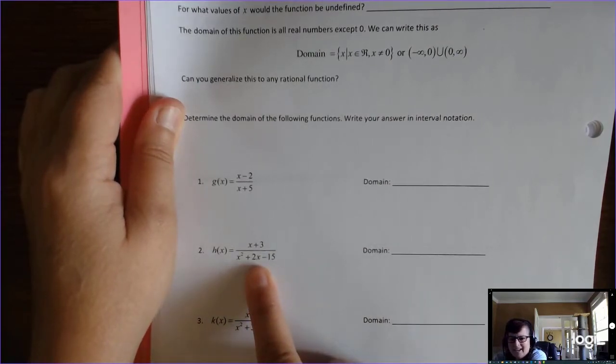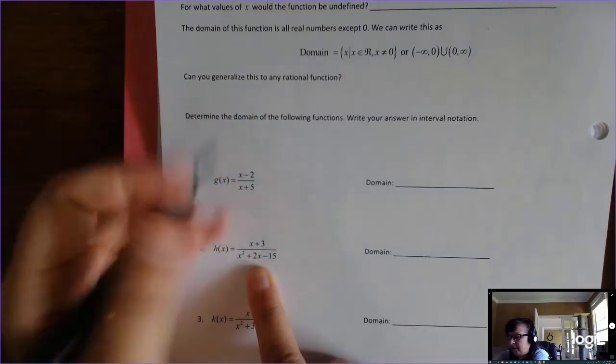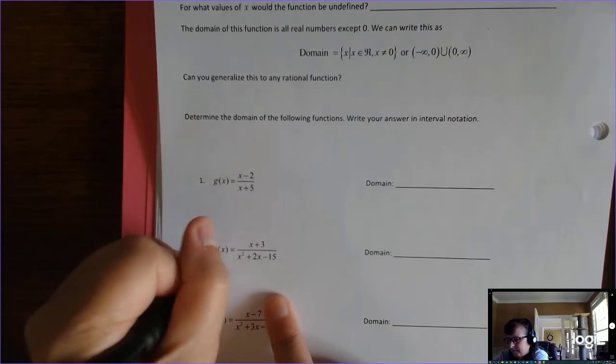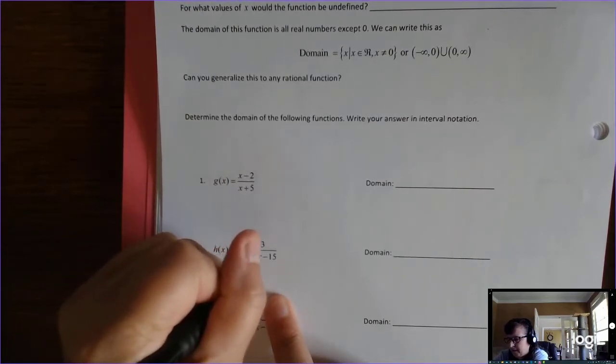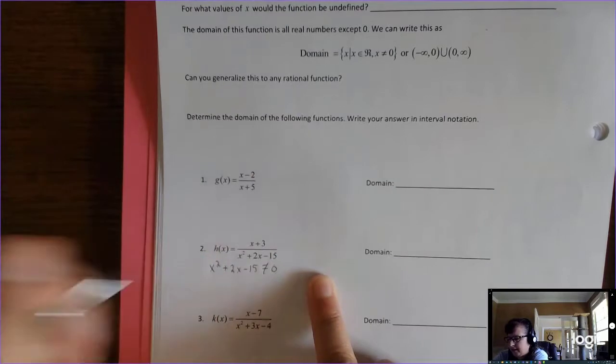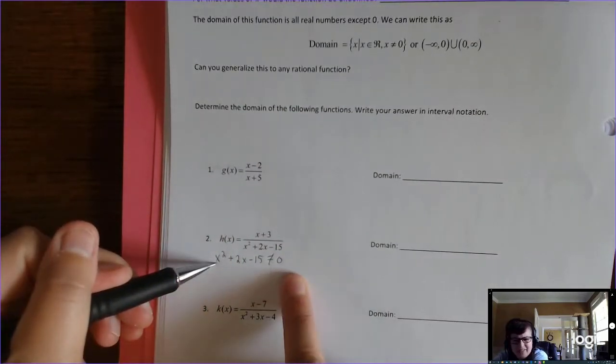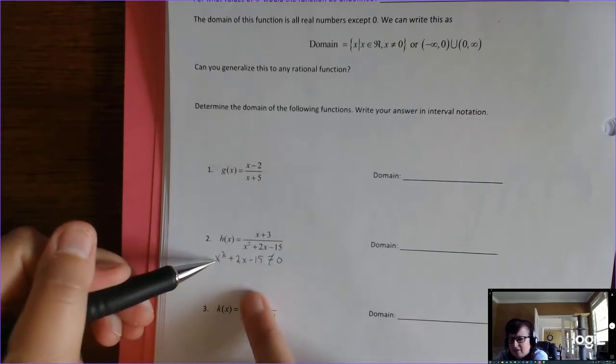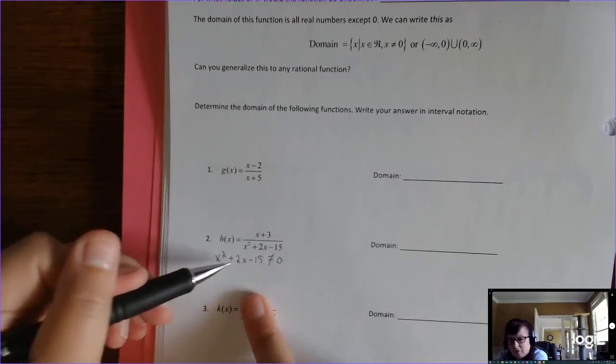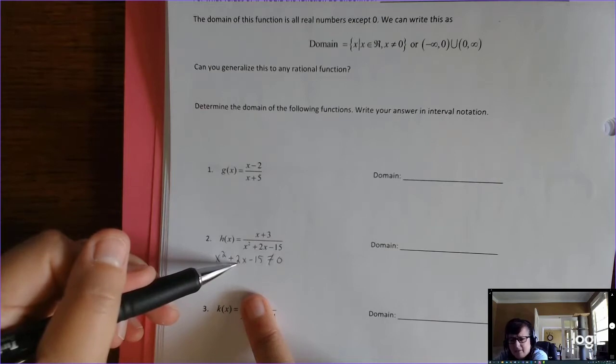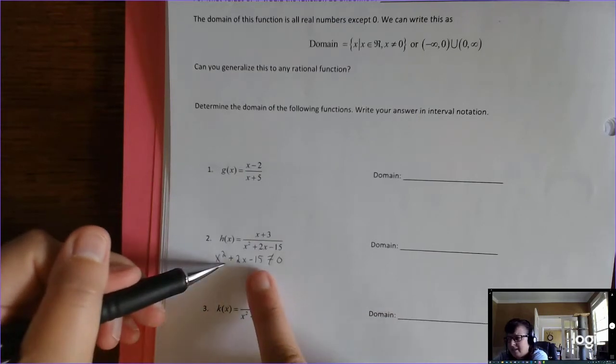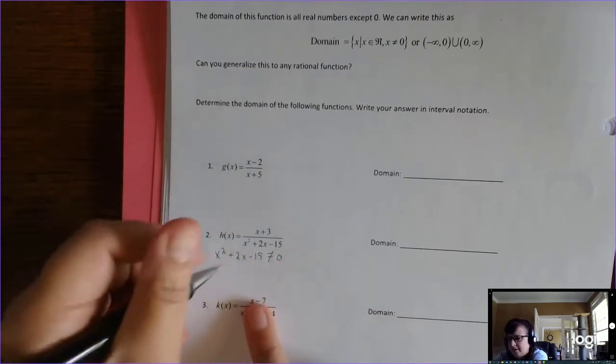So you have to know how to factor those. Before you can find the domain, the denominator cannot equal zero, but the way that you solve a quadratic, a lot of people want to add 15 to both sides, and that's just not going to work because there's an x squared term and there's an x term, so it's different than solving for x when you just have an x. You always have to set it equal to zero and then factor.